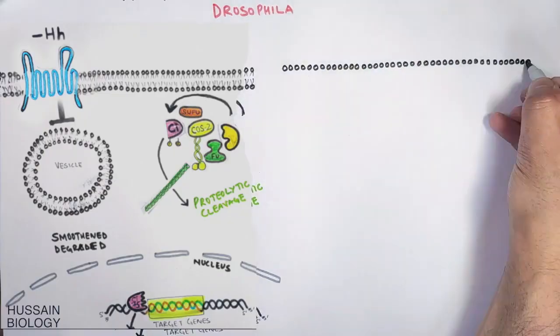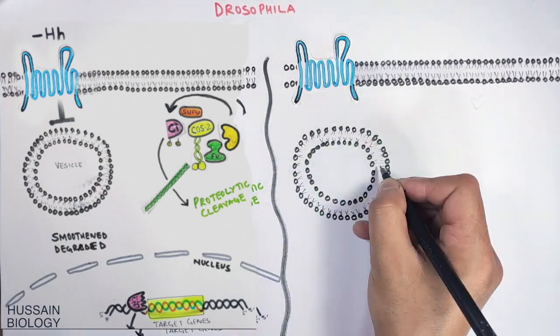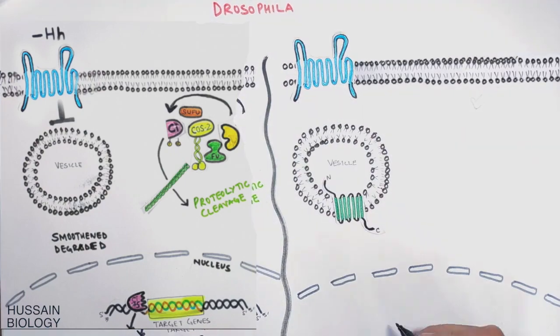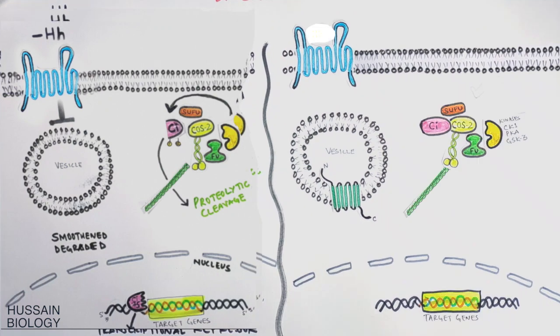Now let's get to the positive signaling of hedgehog pathway. On the right we can see the same cell having same components arranged in the same order. The difference is only here: the presence of hedgehog.